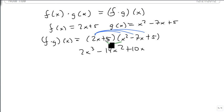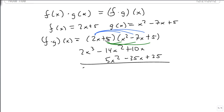And then I'm going to come around the bottom and do 5 times x squared, which is 5x squared. Notice I'm lining it up, minus 35x plus 25. And when I combine my terms, I get 2x cubed minus 9x squared minus 25x plus 25. And here is my result.